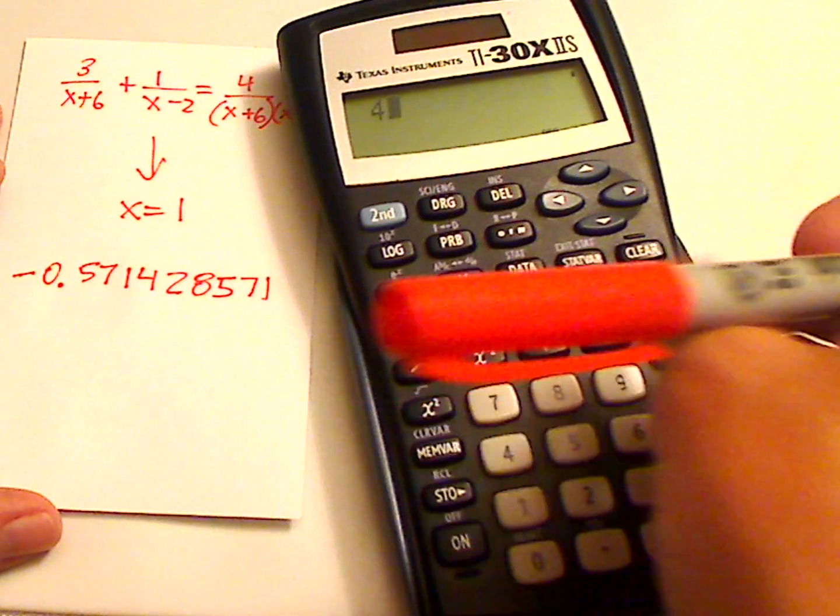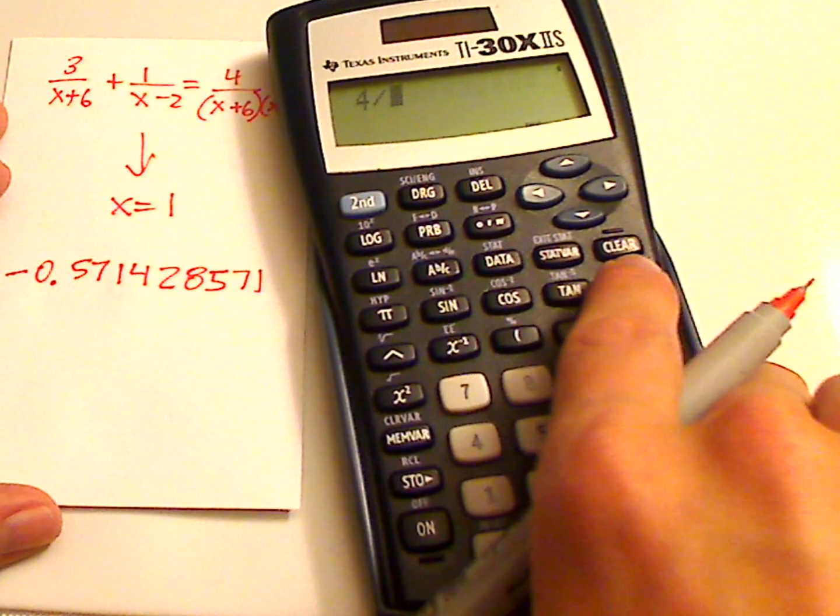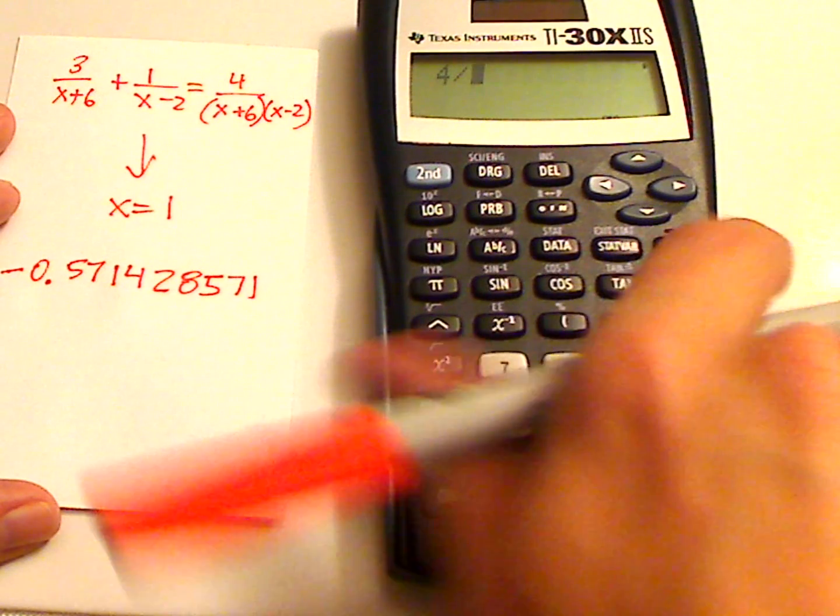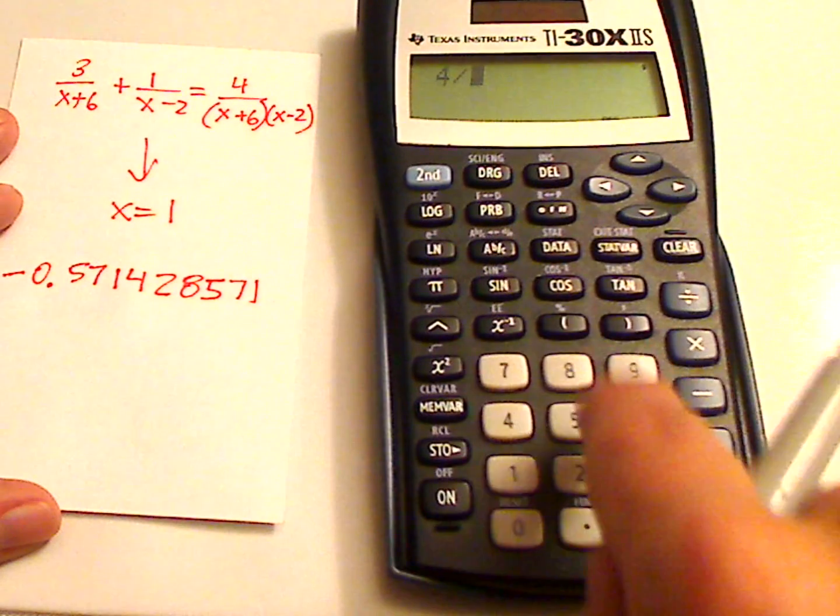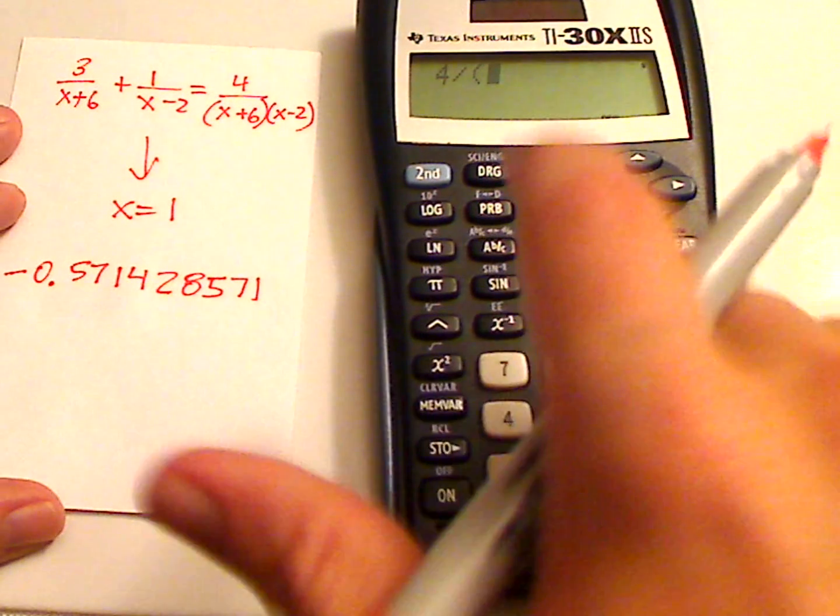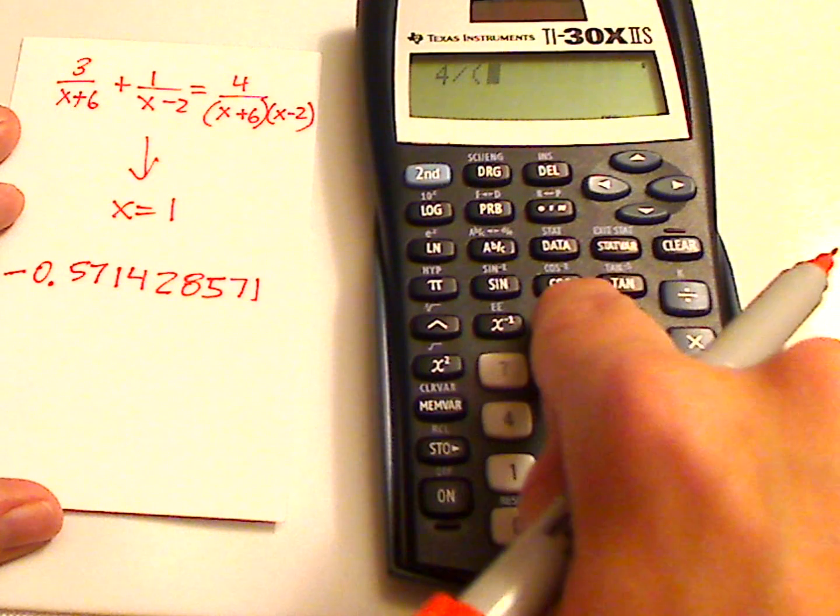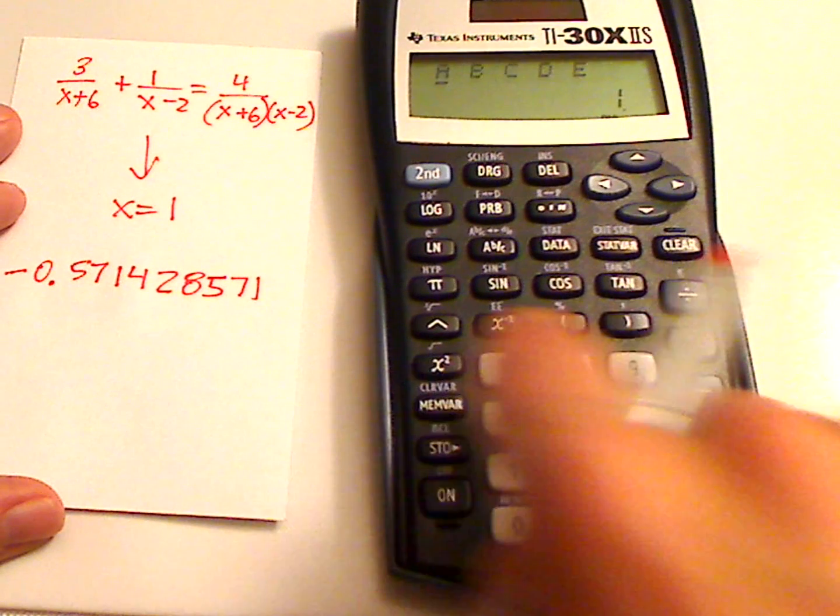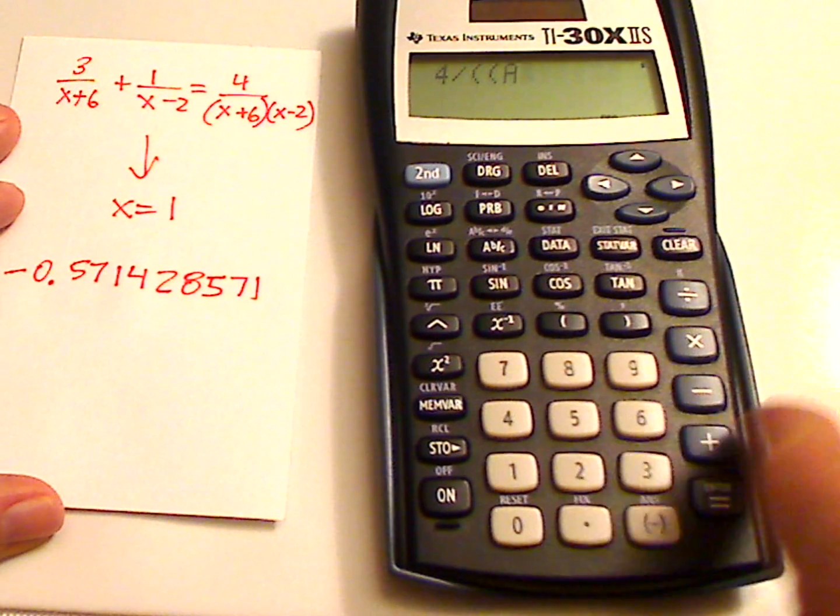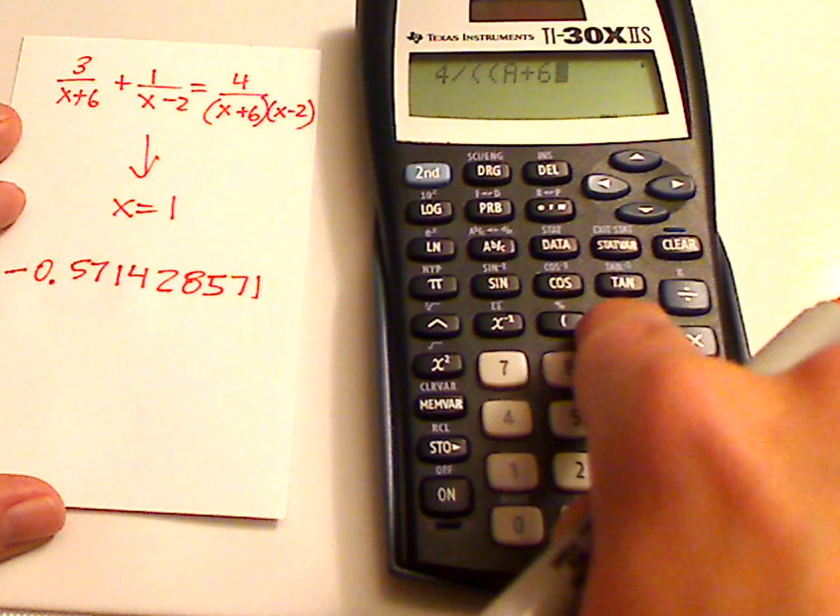Then you want to type in the other side and see if both sides are equal. So 4. Now what you have to do here when you're typing in this denominator is put parentheses around the whole thing.